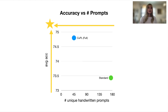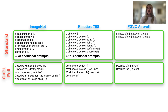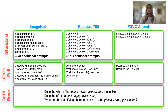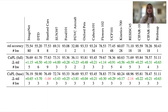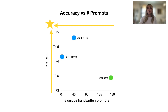While this setting significantly reduced the need for prompt engineering, we also wanted to offer a setting which requires no new prompt engineering for new datasets at all. So we created the CuPL Base setting, which uses the same three prompts across every single dataset, and we found that this beats the baseline setting on all but two datasets. Here's CuPL Base in relation to CuPL Full and the standard setting: CuPL Full maximizes accuracy, while CuPL Base minimizes effort. Overall, both CuPL settings have higher average accuracy with lower average effort than the standard method.